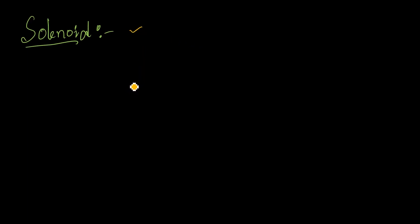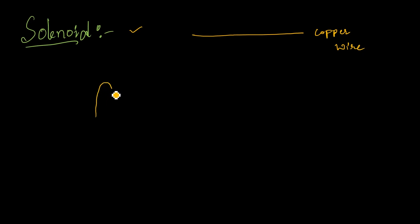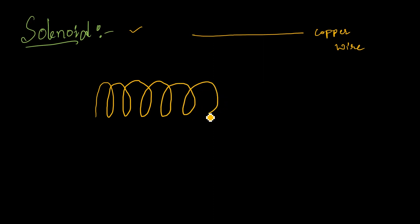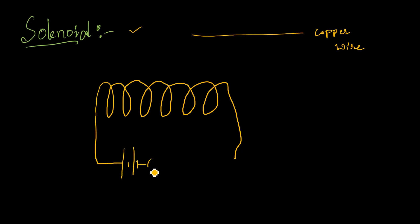Hi everyone, welcome to my channel HTB Academy. Today's topic is solenoid. So take a straight copper wire and wrap it in the form of a cylindrical loop. Connect this to a circuit — I am considering a battery here with a switch. The current will pass through it from the positive terminal to the negative terminal.